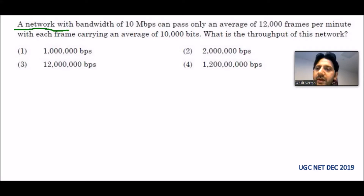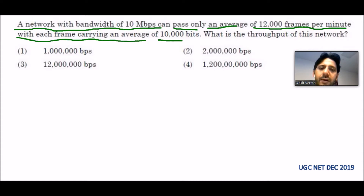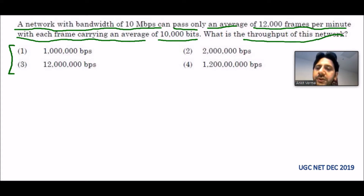A network with bandwidth of 10 Mbps can pass only an average of 12,000 frames per minute, with each frame carrying an average of 10,000 bits. What is the throughput of this network? They are giving us these options.